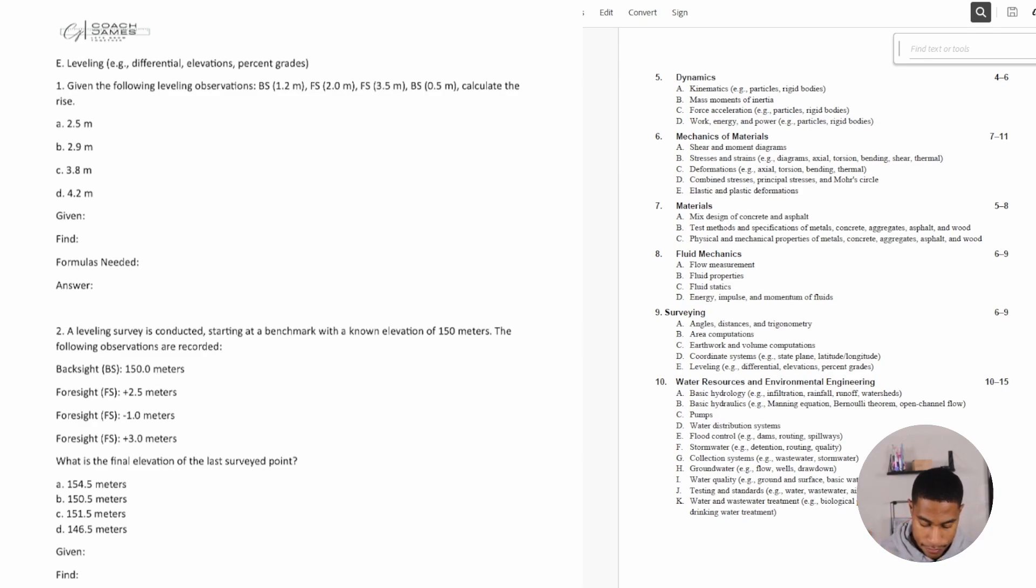And so the things that I go over is very basic, but it's something that the NCEES is going to want you to know. All right, let's take a look at this. Number one says, given the following leveling observations, BS, it's not what you think it is. This stands for backsight reading is 1.2 meters, FS is 2 meters, and then FS is 3.5 meters, and then BS is 0.5 meters. Calculate the rise.